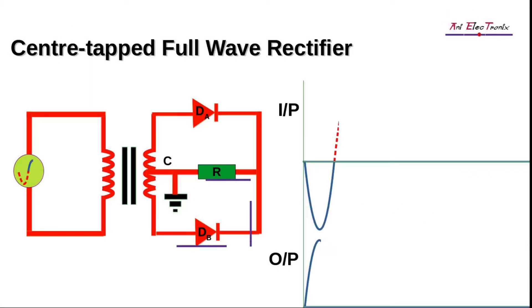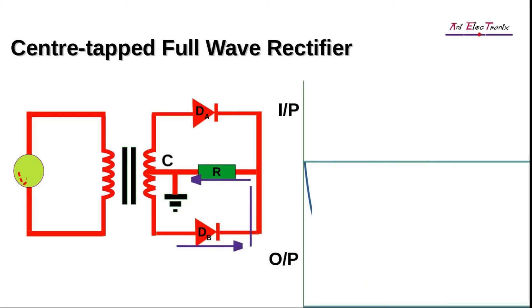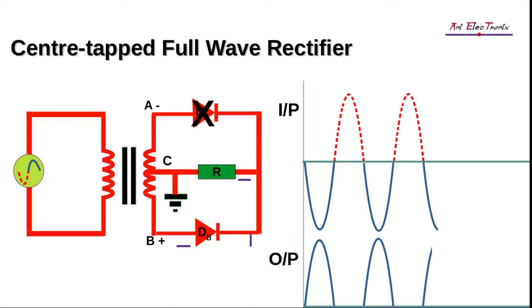During the negative half cycle of the AC input voltage, the diode dB will begin conducting and produce a positive output voltage. The reason for this is that, based on the center tapped point C, point A will be at a negative potential and point B will be at a positive potential. Consequently, diode dB will be in forward bias and will conduct, while diode dA will not conduct because it will be in reverse bias.